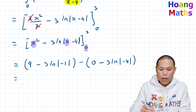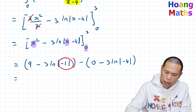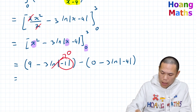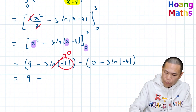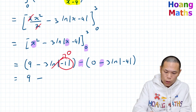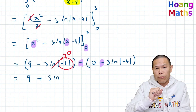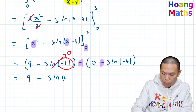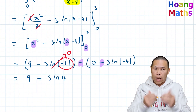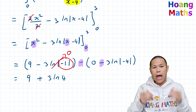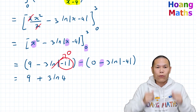Now absolute value of negative 1 is 1, and ln of 1 is 0. So that first term becomes 9 minus 0, which is 9. Then the double negative: minus the quantity 0 minus 3 ln of 4, since absolute value of negative 4 is 4. So that becomes plus 3 ln of 4. Using log law, 3 ln 4 equals ln of 4 cubed, which is ln of 64. So the final answer is 9 plus ln of 64. Thank you so much for watching, bye.